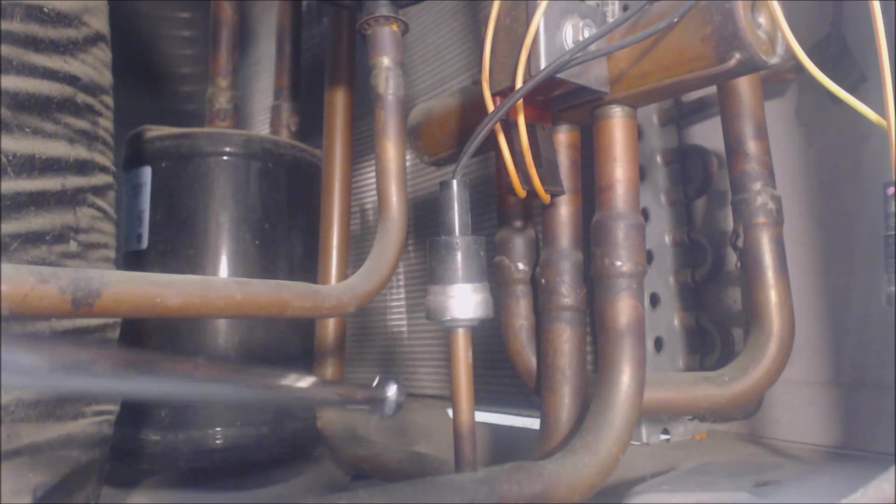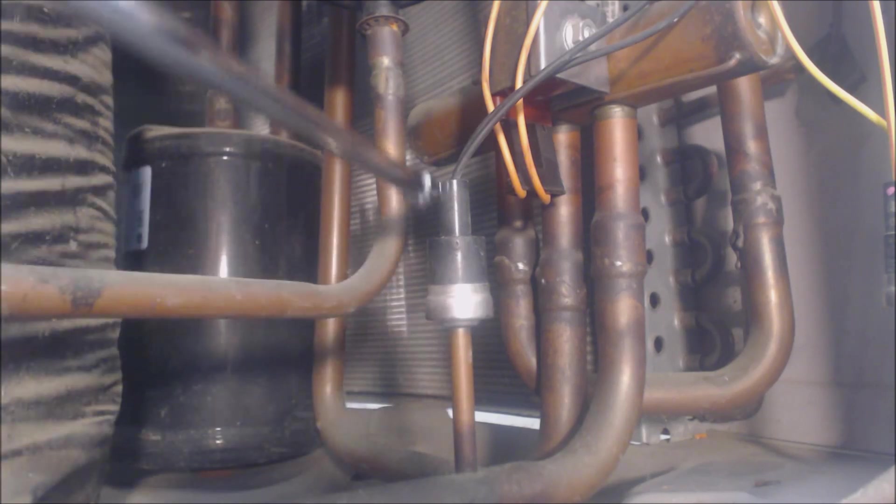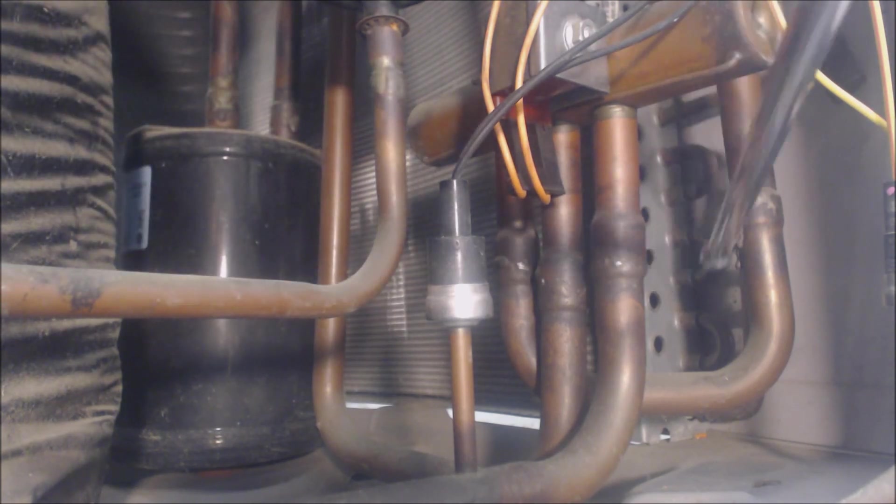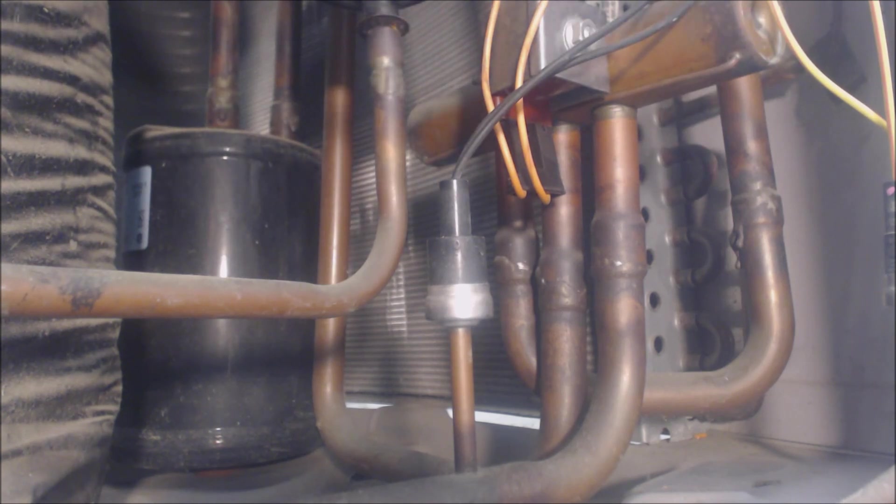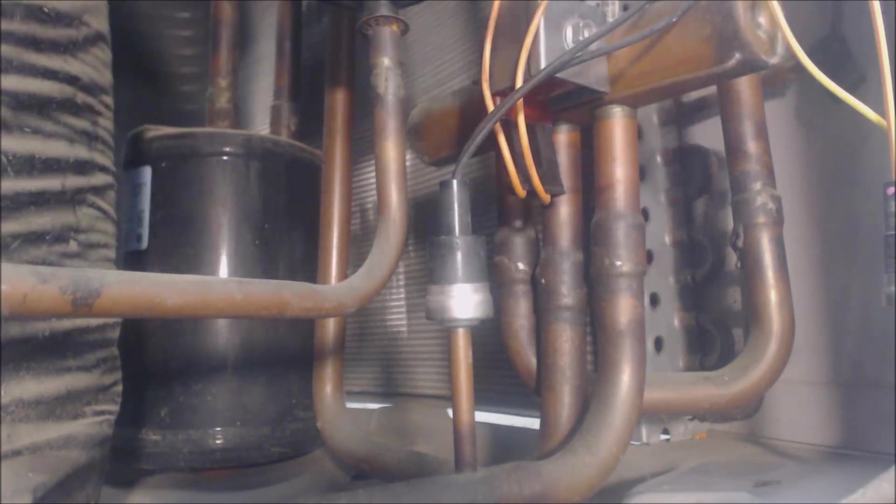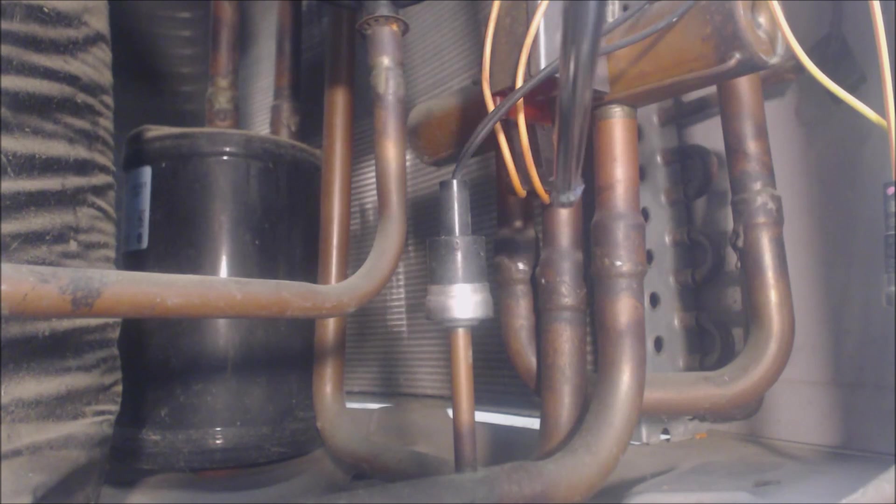So right here we have the high pressure limit switch. It's coming up right off of this vapor line. This right here, this entire assembly, this is the four-way valve or reversing valve. It has four ports, three of which are down here, and one is up high, which I'll show you in a sec.